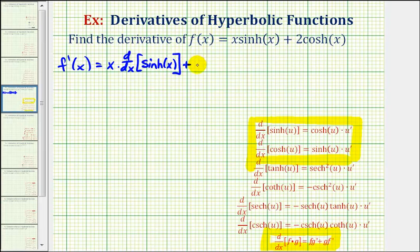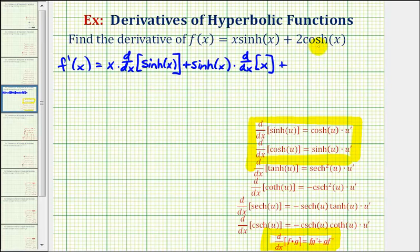Plus the second function, hyperbolic sine x, times the derivative of the first function, which would be the derivative of x. Then plus the derivative of two times hyperbolic cosine x.